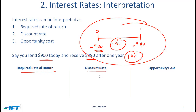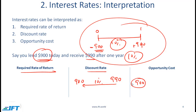The discount rate interpretation is also straightforward. If you think of the money you are getting after one year — which is $990 — you can discount $990 at 10% to get the present value of $900, and therefore 10% can also be thought of as a discount rate. Finally, opportunity cost: if you had taken the $900 and spent it on something else, you have foregone the 10% return you might have received. The concept of opportunity cost is the cost of what you forego, which in this case is the 10% return.